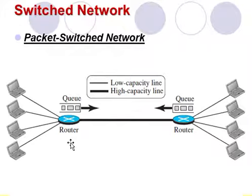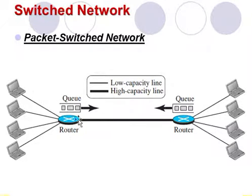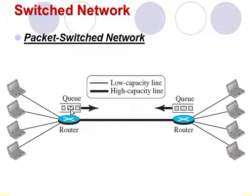However, if a packet arrives at one router when the thick line is already working at its full capacity, the packet should be stored and forwarded in the order they arrive. All messages are divided into different blocks, and if the capacity of the communication line is fully occupied, these blocks wait until the capacity of the line is free.